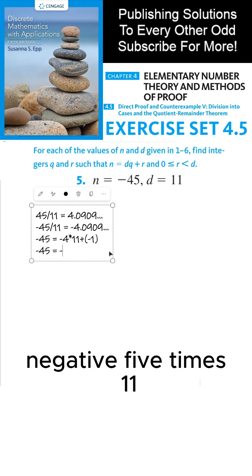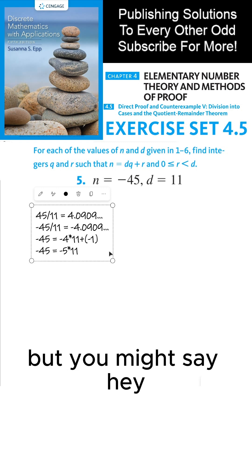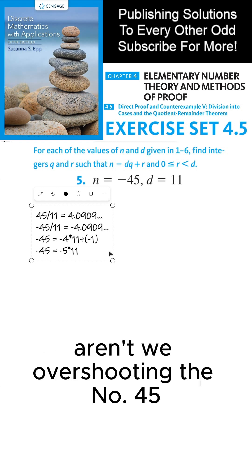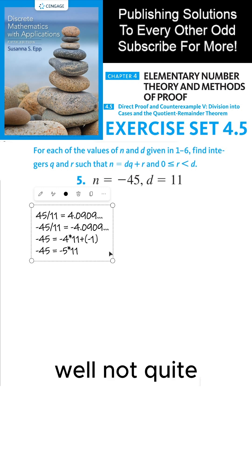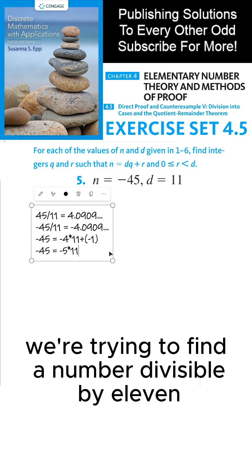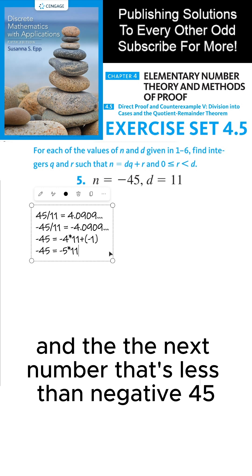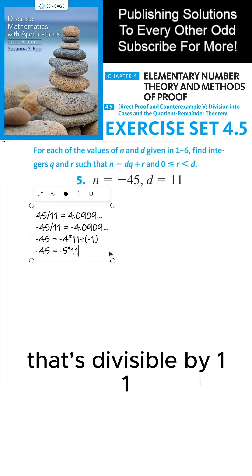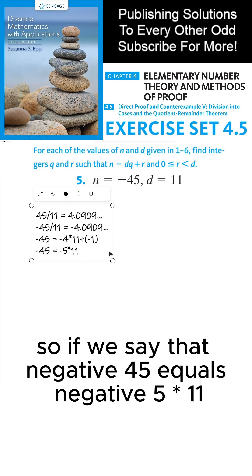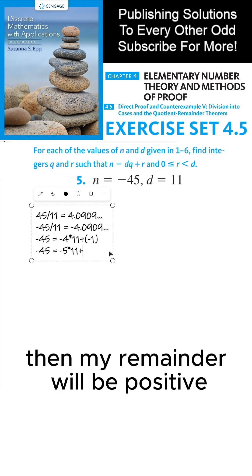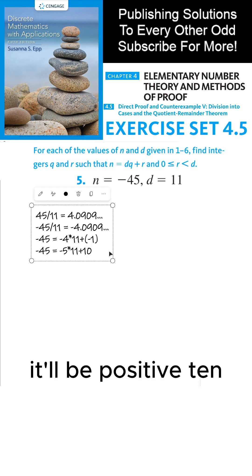I can rewrite this as negative 45 equals negative 5 times 11, which is negative 55. We're trying to find a number divisible by 11 that's less than negative 45, and the next number divisible by 11 is negative 55. So if we say that negative 45 equals negative 5 times 11, then my remainder will be positive, in this case positive 10.